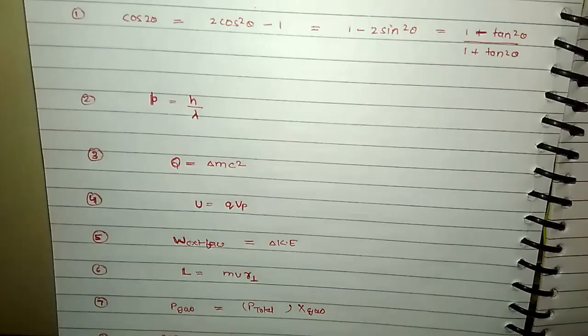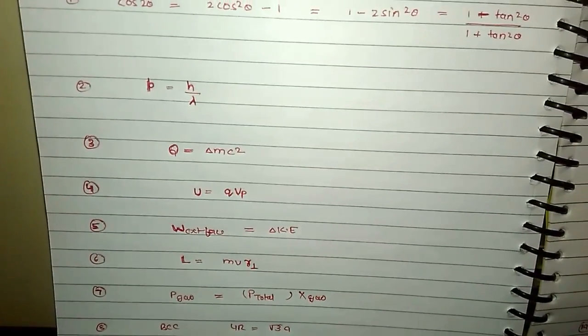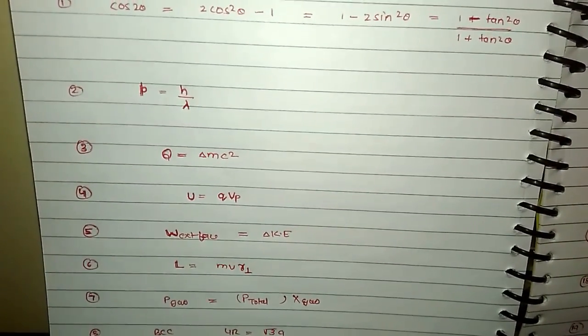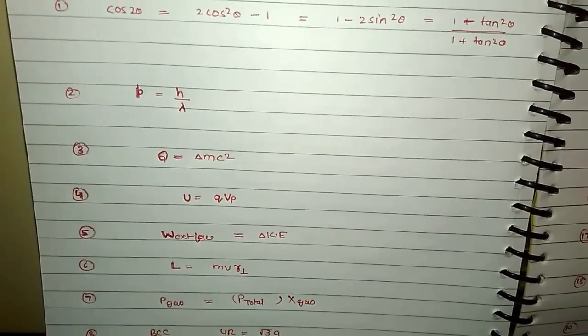Energy E = Δmc². Potential energy = charge × potential.